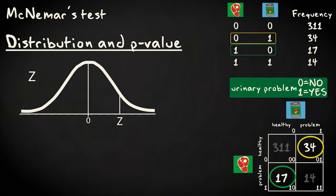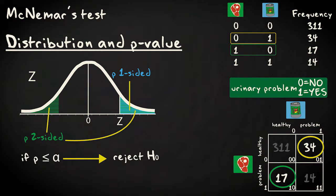We calculate, or look up, the accompanying one-sided or two-sided p-value, depending on the alternative hypothesis. If the p-value is smaller or equal to the predetermined significance level, we reject the null hypothesis. If it's larger, we fail to reject.